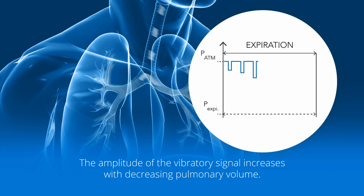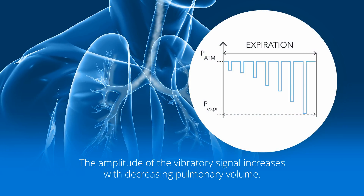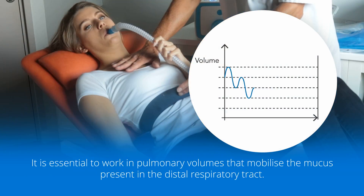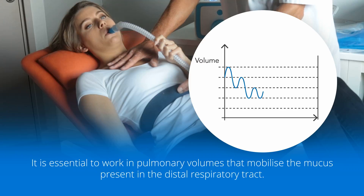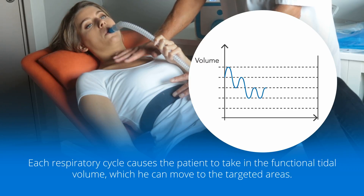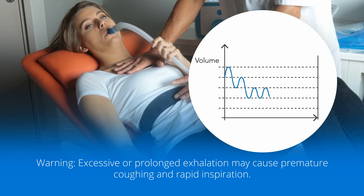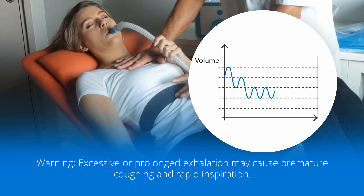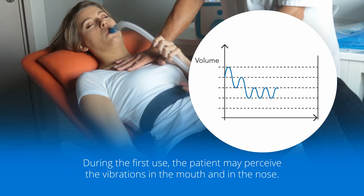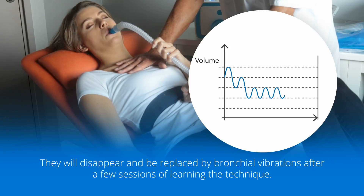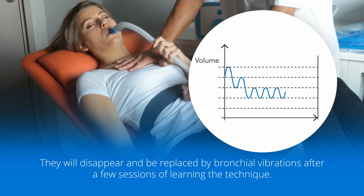The amplitude of the vibratory signal increases with decreasing pulmonary volume. Vibratory amplitude is a major performance criterion. It is essential to work in pulmonary volumes that mobilize the mucus present in the distal respiratory tract. Each respiratory cycle causes the patient to take in the functional tidal volume, which they can move to the targeted areas. Excessive or prolonged exhalation may cause premature coughing and rapid inspiration. During the first use, the patient may perceive the vibrations in the mouth and in the nose. They will disappear and be replaced by bronchial vibrations after a few sessions of learning the technique.